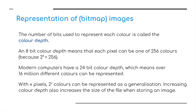Modern computers such as MacBooks or PC laptops have a 24-bit color depth, which means over 16 million different colors can be represented. As a generalization, with x bits per pixel, two to the x colors can be represented. Increasing the color depth also increases the size of the file when storing an image — just like with sound, the better the quality, the bigger the file you need to store.